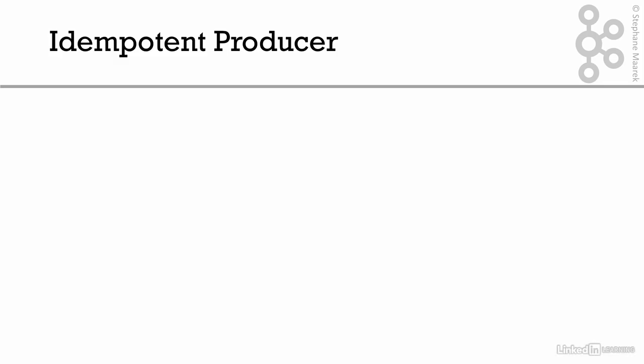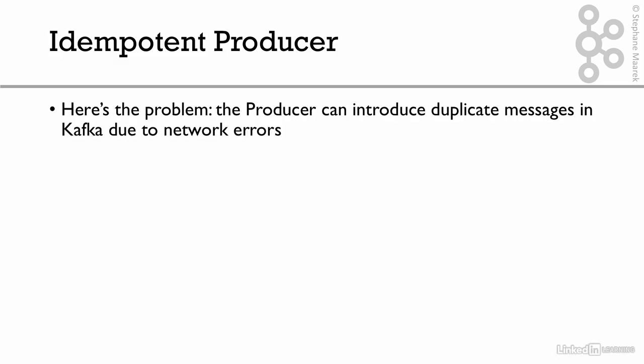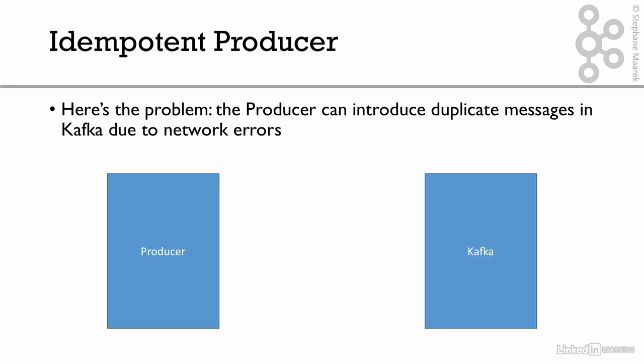We have a new concept in Kafka: the idempotent producer. Here's the problem — when the producer sends messages to Kafka, you can introduce duplicate messages due to network errors. This is a problem that's been there forever, but no one really dealt with it until recently.